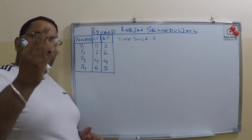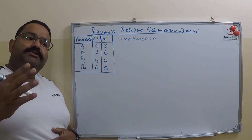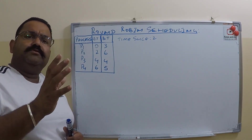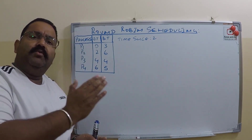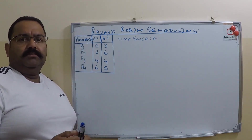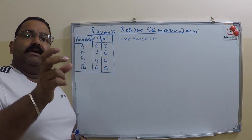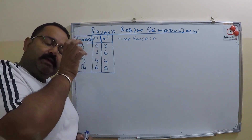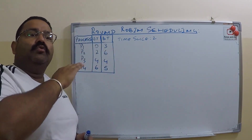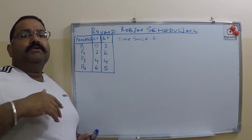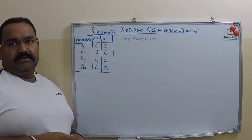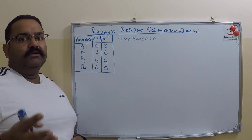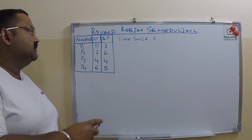So what is Round Robin CPU scheduling? In Round Robin CPU scheduling, we divide the CPU time into equal time slices and then we assign the equal amount of time slices to all the processes which are waiting for their turn.